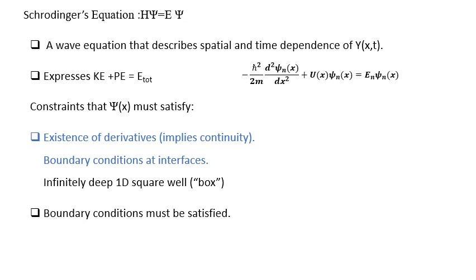There are a few restrictions that psi of x must satisfy. First, the derivative of psi of x must exist. If the derivative exists, it implies psi of x is a continuous function. It should also satisfy the boundary conditions at the interface. We solve using these boundary conditions as we have seen for the one-dimensional potential well.